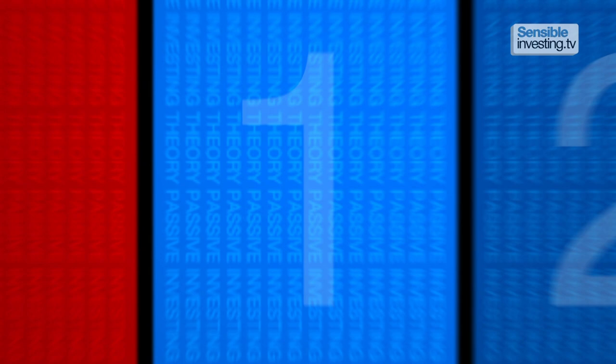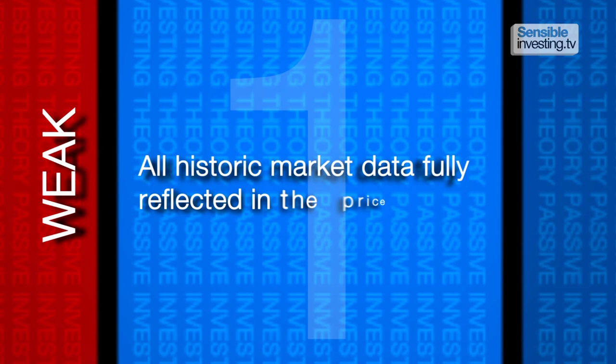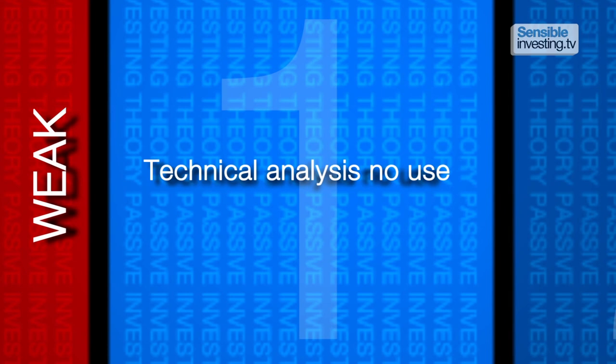If you believe that in its extreme form, there should be absolutely no scope for an active manager to beat the market, because the market's right. There are three different versions of the efficient market hypothesis. The weak form asserts that all historic market data are fully reflected in the price of a particular stock.